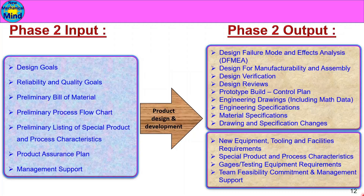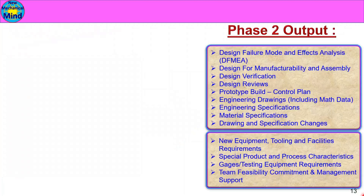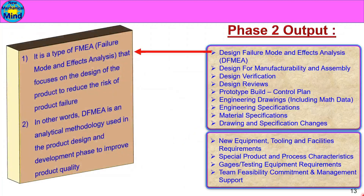First, Design Failure Mode and Effects Analysis. DFMEA is a type of FMEA that focuses on the design of the product to reduce the risk of product failure. In other words, DFMEA is an analytical methodology used in the product design and development phase to improve product quality.